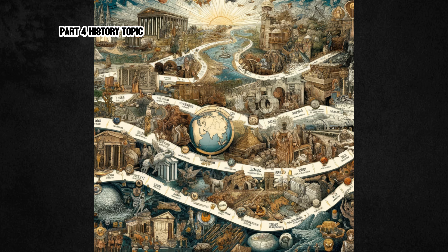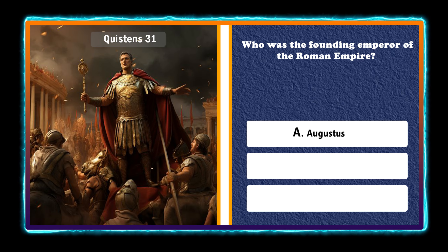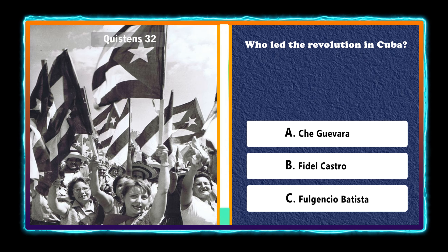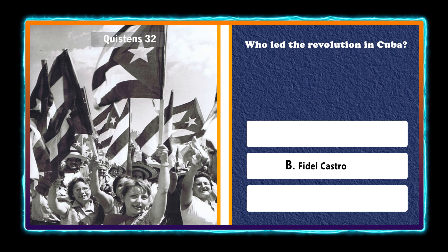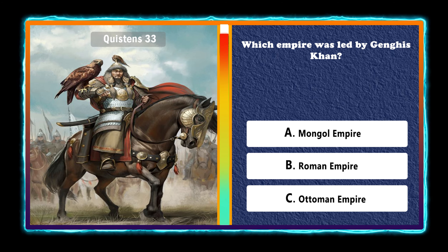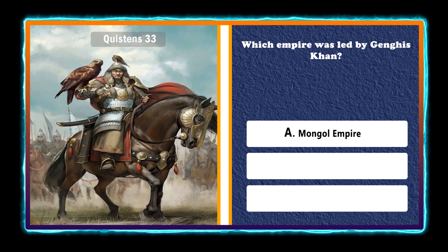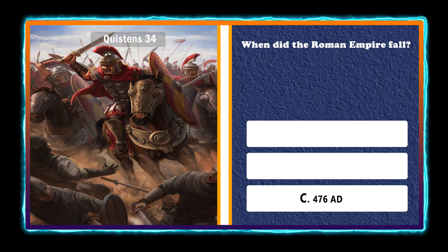Part 4, History. Who was the founding emperor of the Roman Empire? Augustus. Who led the revolution in Cuba? Fidel Castro. Which empire was led by Genghis Khan? Mongol Empire. When did the Roman Empire fall? 476 A.D.